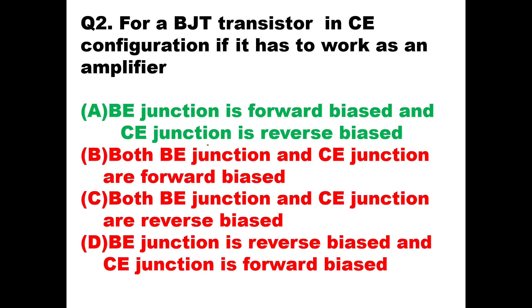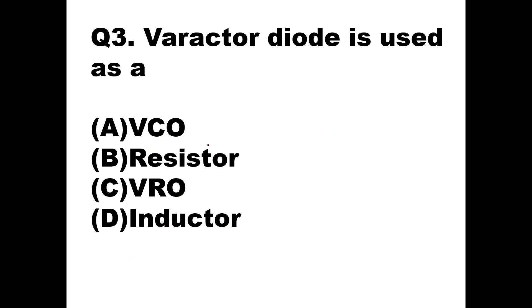BE, that is the base-emitter junction, is forward biased and CE, that is the collector-emitter junction, is reverse biased. So option A is the right answer for the BJT to work as an amplifier in common emitter mode.